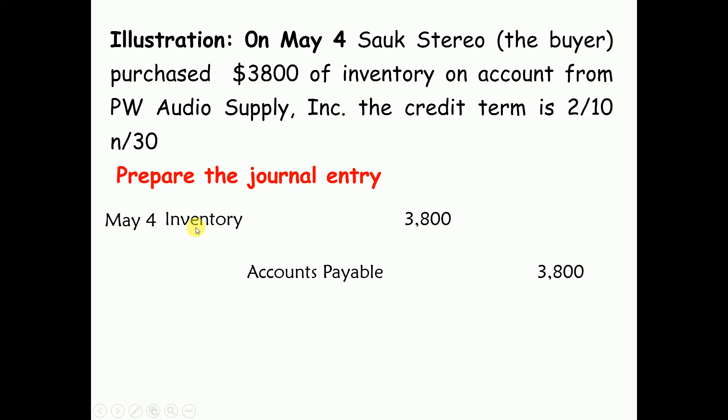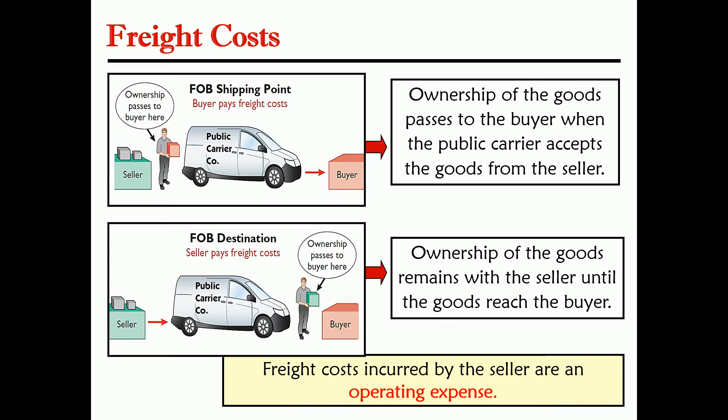In the perpetual inventory system, the ownership is transferred from the seller to the buyer at the time of shipping — FOB shipping point. It is important to identify who must pay the transportation costs. Those costs become part of the cost of inventory for the buyer.